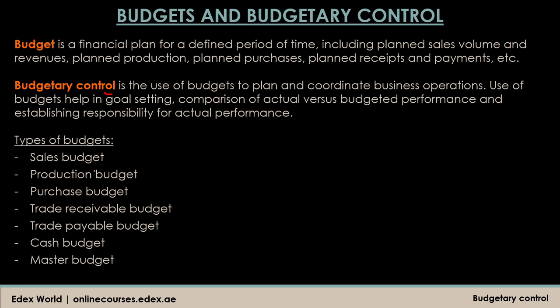Some of the types of budgets that an organization can prepare include the sales budget, production budget, purchase budget, trade receivables and trade payables budget, cash budget, and the master budget. We will see each of these budgets in detail — their meaning, format, and a quick example so you understand how to prepare each one.